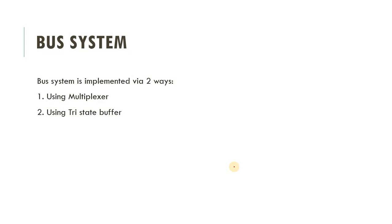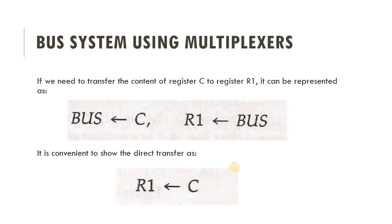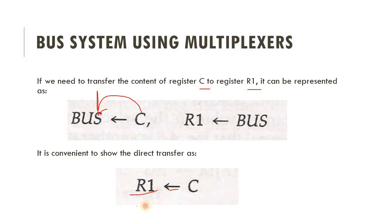Let's understand how the bus is implemented using the multiplexer. If you need to transfer the content of register C to register R1, it is represented as: register C → R1. The first step is the data of register C is transferred into the bus, and the second step is the data on the bus is transferred to register R1. So data of register C first goes to the bus, then the bus transfers this data to register R1.